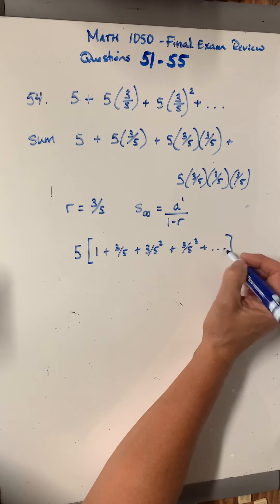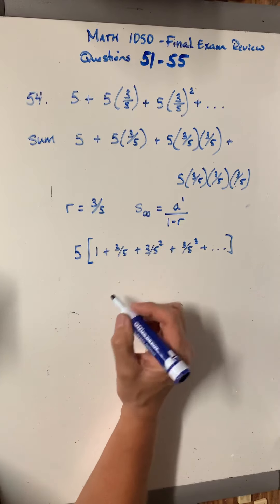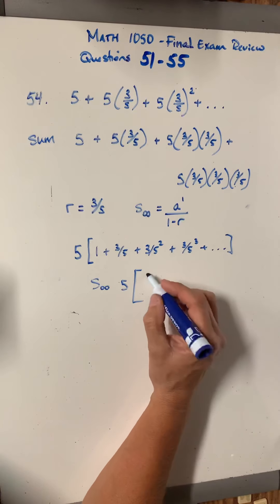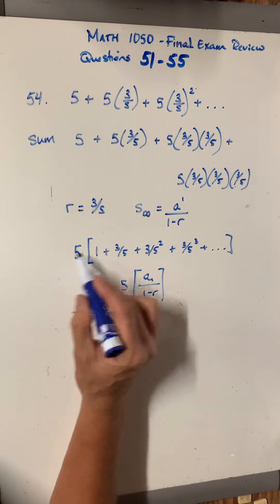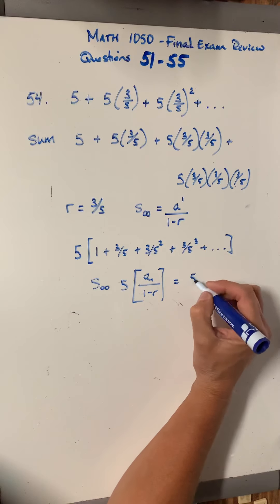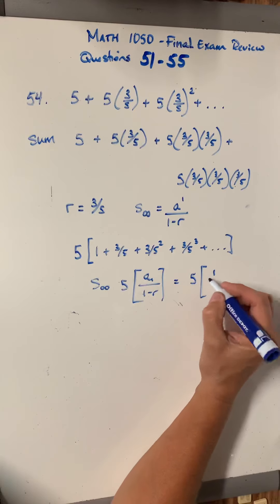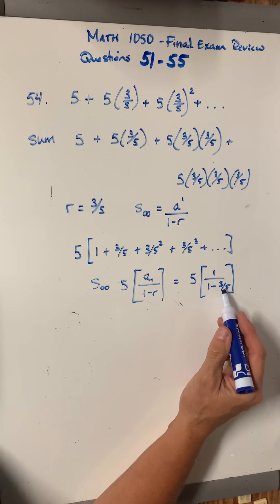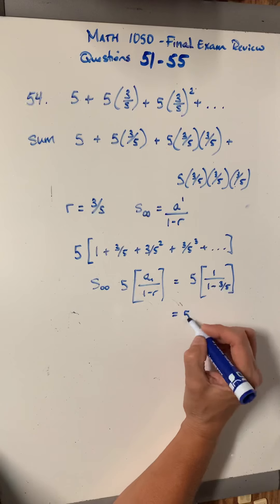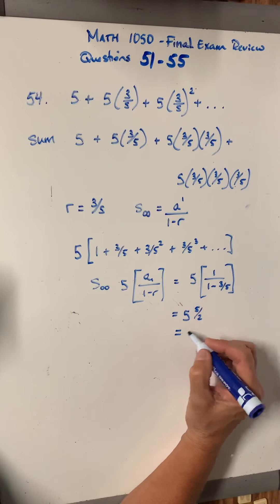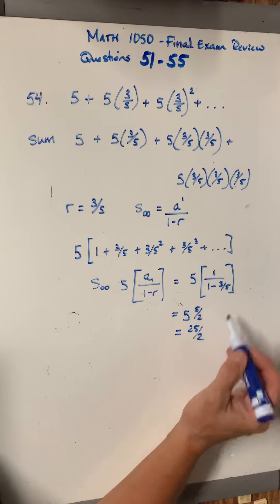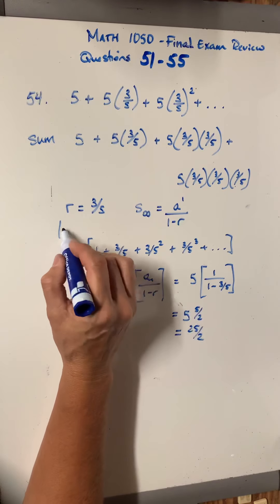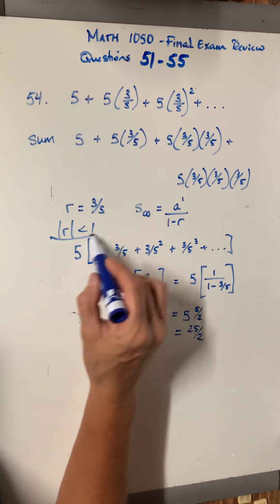So this 5 will sit out in front. So my sum is going to be 5 times what I put into this formula, a sub 1 over 1 minus r. So in other words, you pull the 5 out and then you deal with it later. Well, what is my first term then? My first term is now 1. My common ratio is 3 fifths. 1 minus 3 fifths is 2 fifths. 1 over 2 fifths is 5 halves. So you could do this in your calculator or whatever. But you end up with 25 halves is the sum. And we could do that because the absolute value of r was less than 1. And that's when we can use that formula.